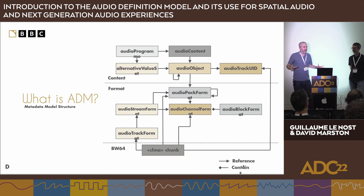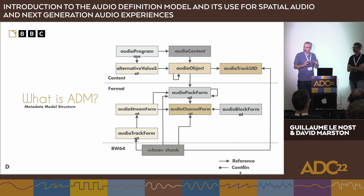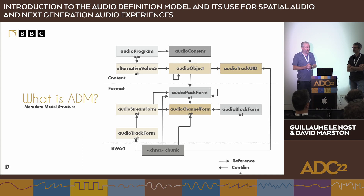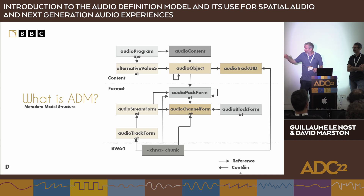Here's an overview of the ADM's conceptual model. It's split into two halves: the content part at the top and the format part at the bottom. The format describes, as you might guess, the format of the audio itself — what a renderer would use to interpret the audio. Starting in the middle, the audio channel format block represents a single channel of audio. For example, for a stereo pair, one channel could be labelled 'left,' with an angle and a position in space.